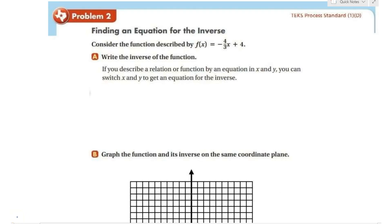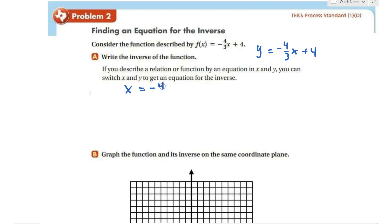Now we apply this to finding the inverse of a linear function. It says write the inverse of the function. When you describe a relation by an equation, you switch x and y to get the inverse. So f(x) equals y equals negative four-thirds x plus four, and for the inverse we switch x and y to get x equals negative four-thirds y plus four.